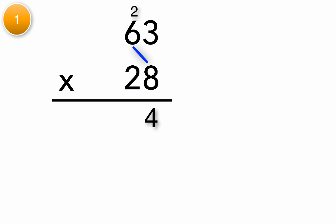6 times 8 is 48. Plus the 2 that we've carried is 50. Now let's multiply in the tens. First put the 0, since we are multiplying in the tens column. Now let's multiply. 2 times 3 is 6. 6 times 2 is 12.